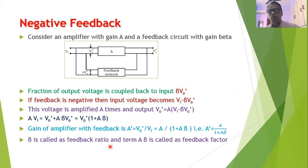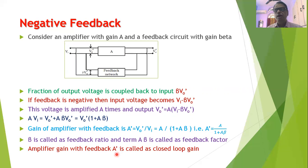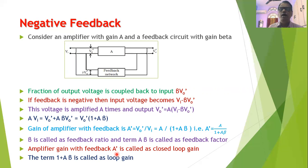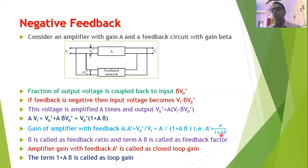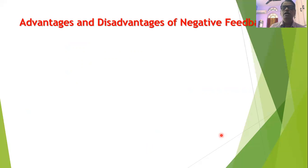Where beta is the feedback ratio and A·beta is the feedback factor. The gain A' is the closed-loop gain, and A·beta is the loop gain of the amplifier. With negative feedback, the denominator increases and therefore the gain of the amplifier decreases. While in case of positive feedback, the gain of the amplifier will increase.